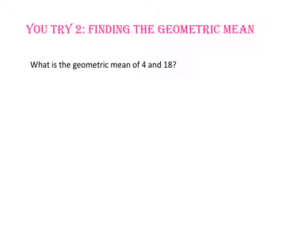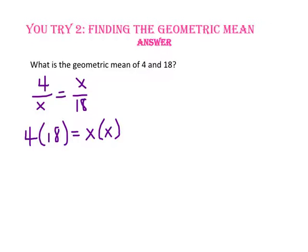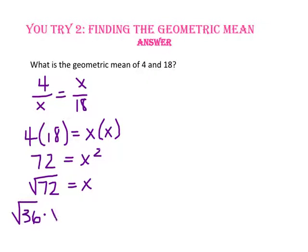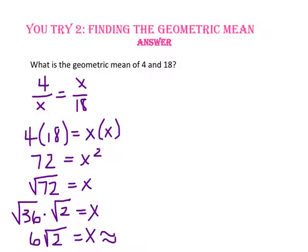Pause the video and do you try number 2. What is the geometric mean of 4 and 18? Starting with our proportion 4 to X equals X to 18, using cross products: 4 times 18 equals X squared, so 72 equals X squared. Taking the square root of both sides, X equals the square root of 72, which simplifies to 6 radical 2, or approximately 8.5.